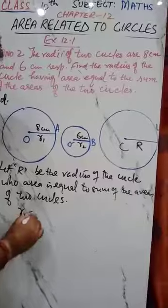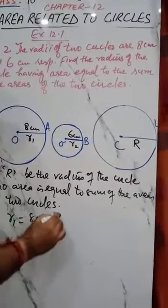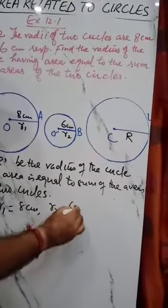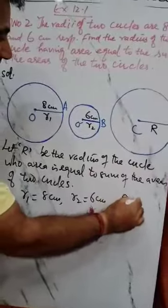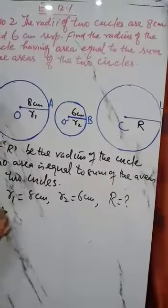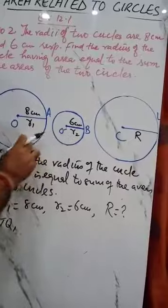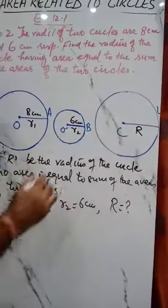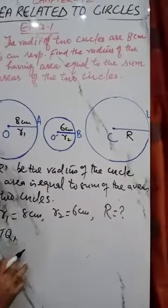So r1 is 8 cm, r2 is 6 cm, and we need to find r. According to the question, the sum of the areas of these two circles equals the area of the required circle. That means πr²